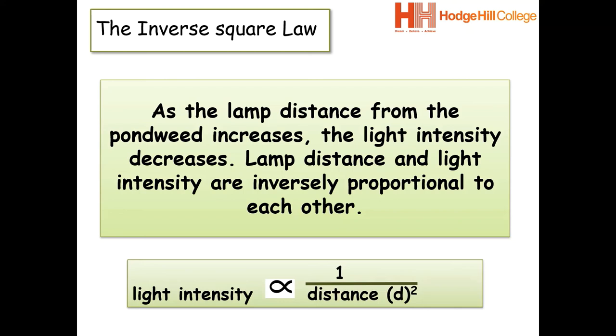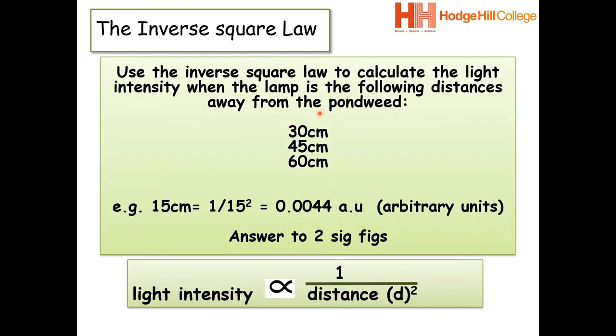So I'll show you how that looks with some data plugged in. So in this case, if we use this example, 15 centimetres, if we wanted to calculate what the light intensity would be proportional to, we would do one divided by 15 squared and we would get 0.0044 arbitrary units or AU. So that's an answer to two significant figures. I want you to see if you can pause the video and use that example to help you calculate these three figures as well.